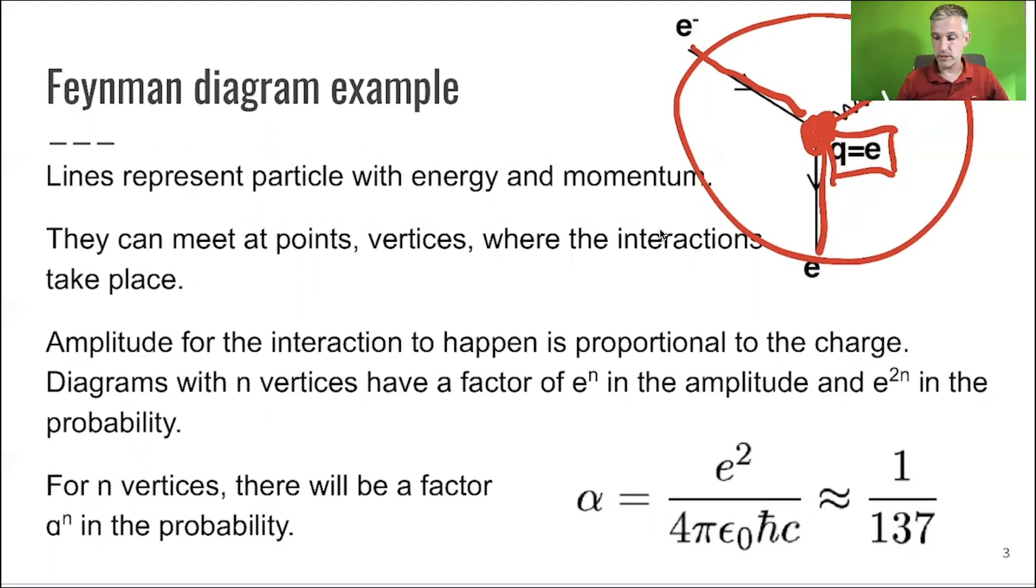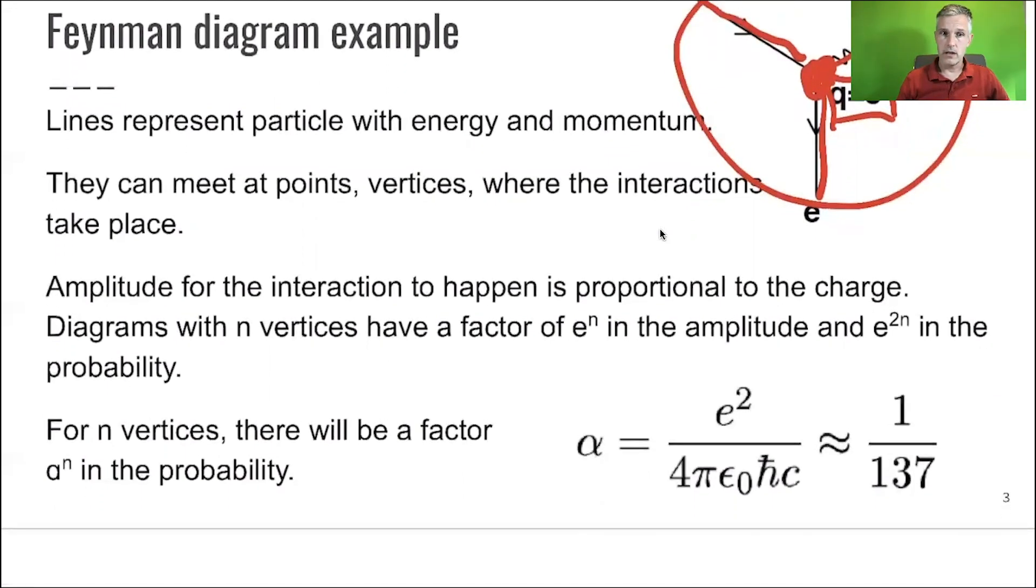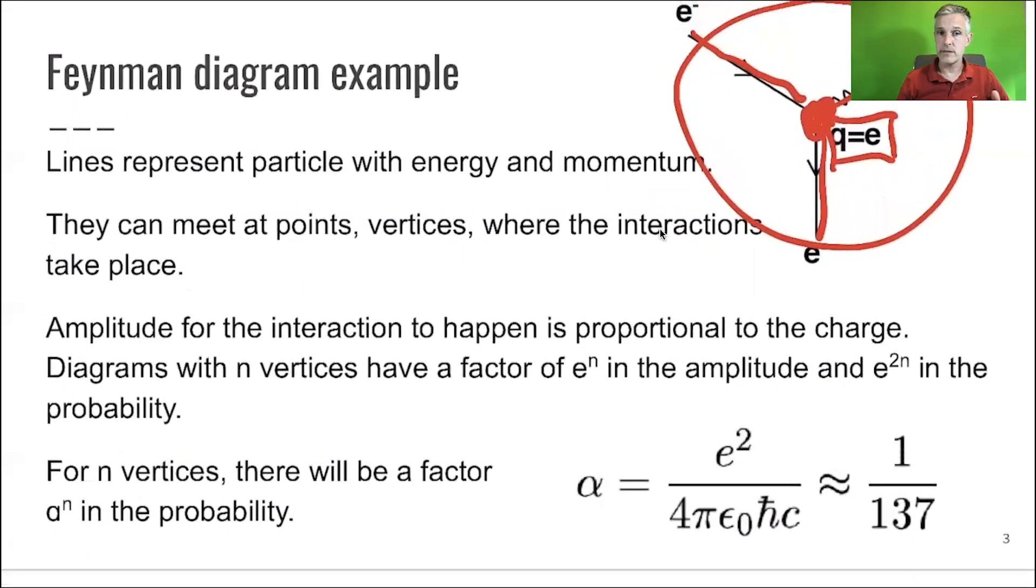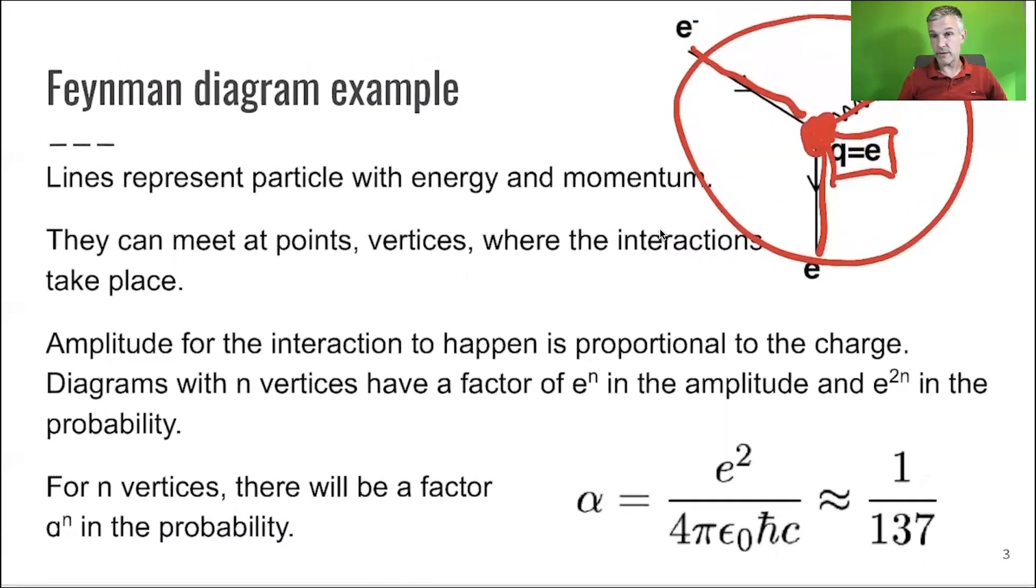Don't get confused, e is the charge. So for n vertices, there will be a factor α to the nth power for the probability. And so since α is 1 over 137, you see that if I want to do calculations, diagrams which have n vertices will be suppressed, will not contribute much to our perturbation series, because α is much, much smaller than 1.